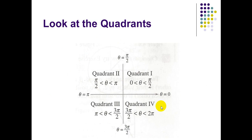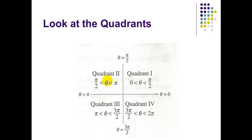Quadrants: in the first quadrant, theta is between 0 and π/2. π/2 is equivalent to 90°. In the second quadrant, theta is between π/2 and π. π/2 is equivalent to 90° and π is equivalent to 180°.